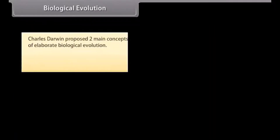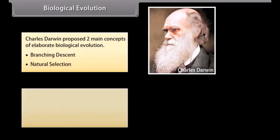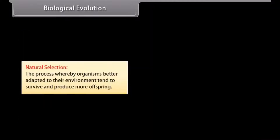Charles Darwin proposed two main concepts of biological evolution: 1. Branching descent and 2. Natural selection. Branching descent is when evolution takes place as more favorable population traits are passed on to each generation — this is called descent with modification.